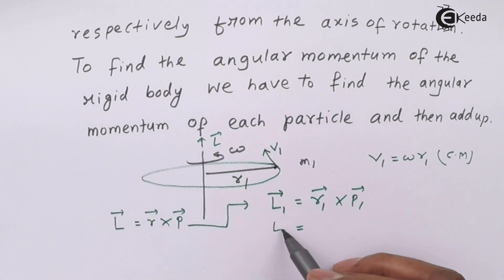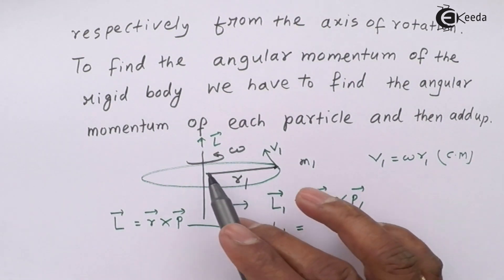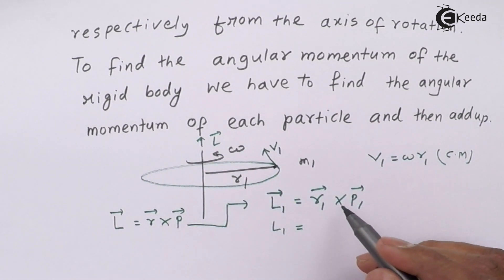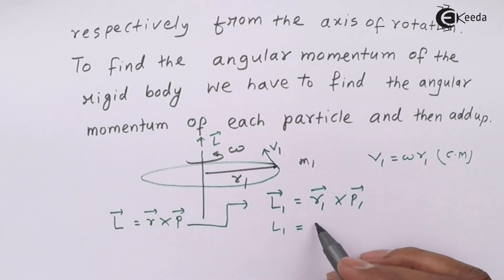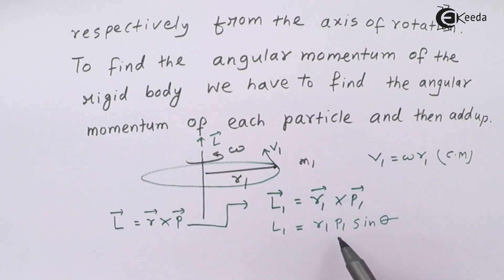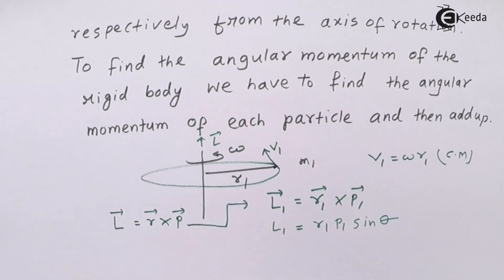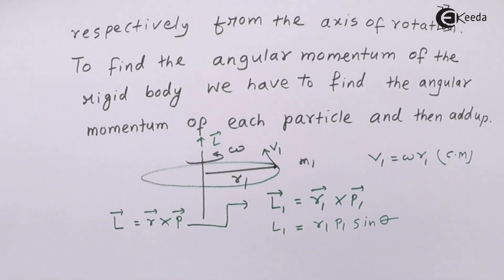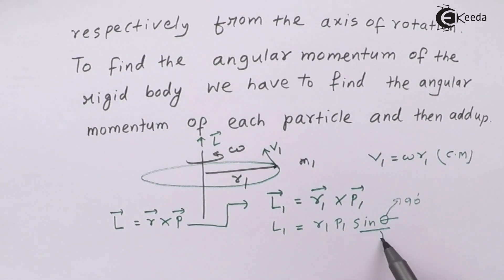To find the magnitude, L1 equals R1 times P1 times sine theta. This is the magnitude of the cross product, which is AB sine theta. Theta is the angle between the two vectors. When a body rotates in a circle, the radius vector and the linear velocity always make an angle of 90 degrees. So sine theta equals one.